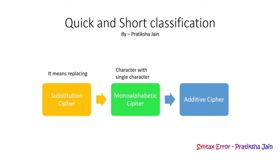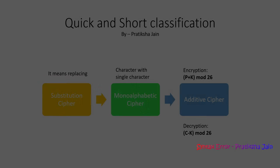Encryption for additive cipher uses the formula: (p + k) mod 26, where p stands for plain text and k for key. For decryption the formula is: (c - k) mod 26, where c is cipher text. We use 26 because it represents the 26 alphabets.